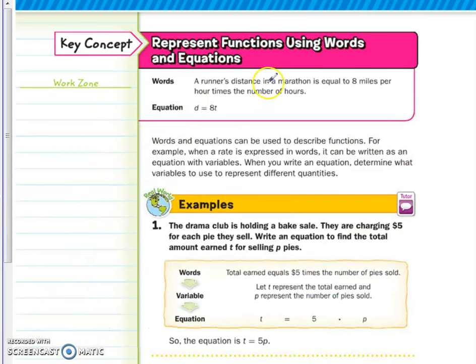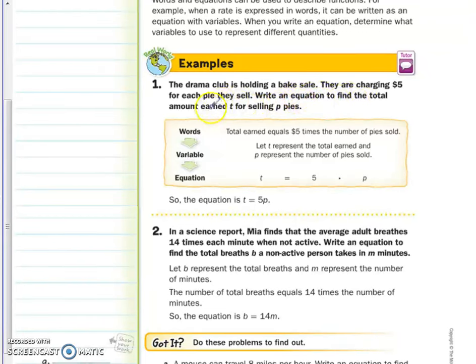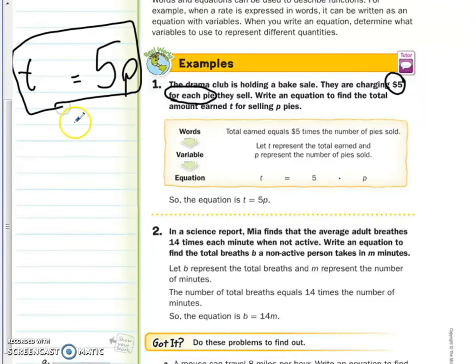All right, let's go to the next example. The first one. The drama club is holding a bake sale. They are charging $5 for each pie they sell. Write an equation to find the total amount earned T for selling P pies. What they want you to do is use T and P in your equation. But what we have to do is read carefully and look. Is it $5 per price or is it $5 per pie? And if you just read it carefully, you should know that it's $5 per pie, which means that you just put your coefficient 5 in front of P. That's literally all you have to do for these questions. So there's the first example.